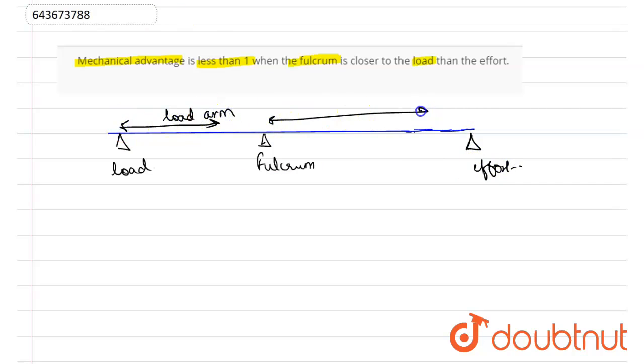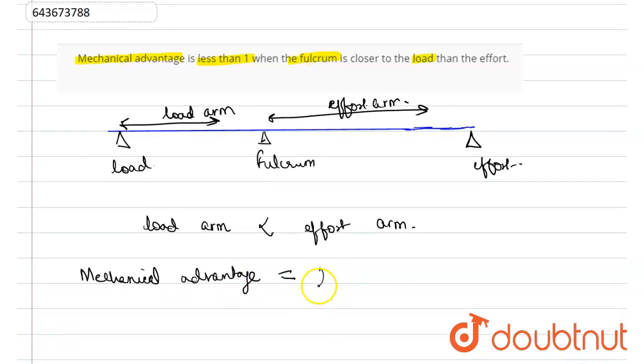They are different, and load arm here is less than effort arm. We know mechanical advantage can be found out by the formula: load arm upon effort arm.